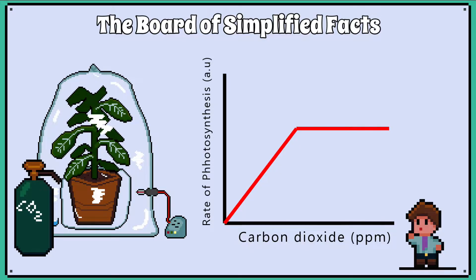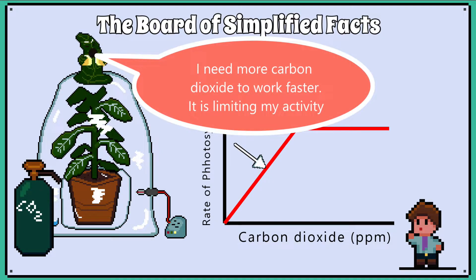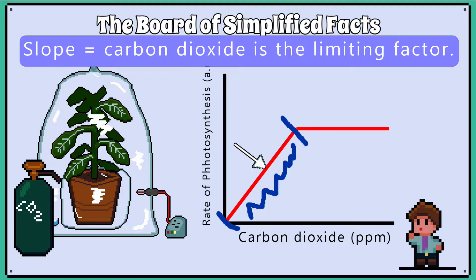Starting with the carbon dioxide limiting factor graph, let's look at what happens to the plant's rate of photosynthesis when carbon dioxide levels are at zero in the bag. As you would expect, the rate of photosynthesis is zero. We will gradually add more carbon dioxide into the bag and notice how the rate of photosynthesis is increasing. At this point, if we keep increasing carbon dioxide and the rate of photosynthesis doesn't level off, then carbon dioxide is limiting photosynthesis. The plant wants more carbon dioxide as it has the capacity to photosynthesize more. Remember: slope equals carbon dioxide levels are too low — carbon dioxide is a limiting factor.